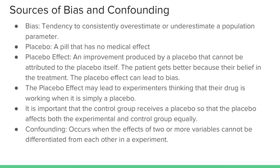Bias is the tendency of a measurement to consistently over or underestimate a population parameter. Bias can result from other unintentional differences between the different treatment groups. For example, if group 1 gets an experimental pill and group 2 gets no pill, this could potentially influence the result because the people in the study know whether they receive the treatment. This could lead to the placebo effect, meaning that the subjects who are treated may simply get better because they think they are being treated.